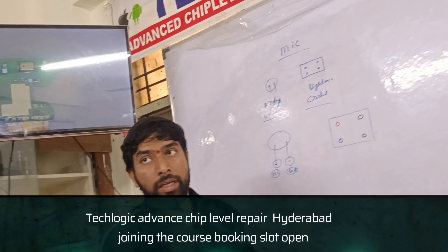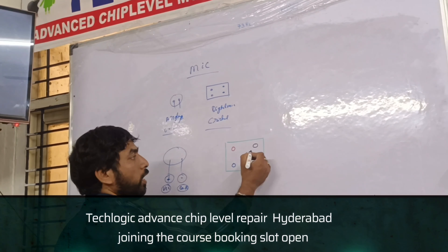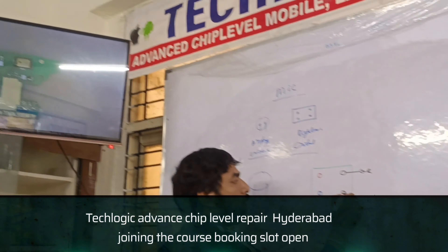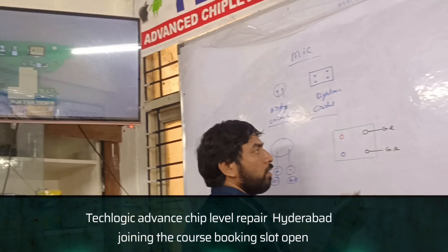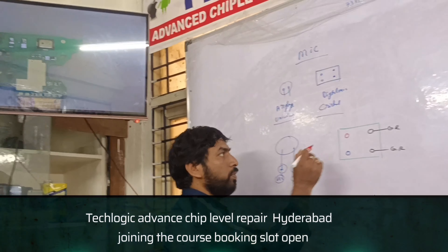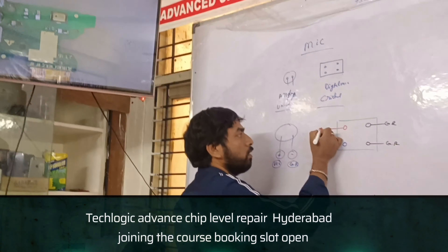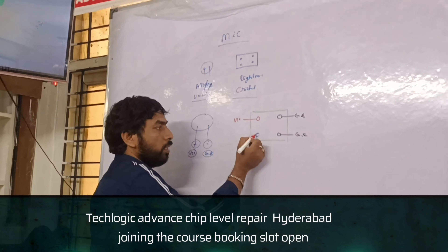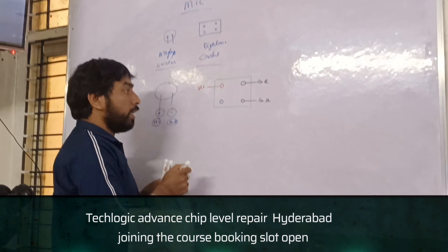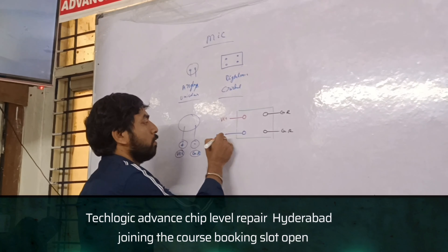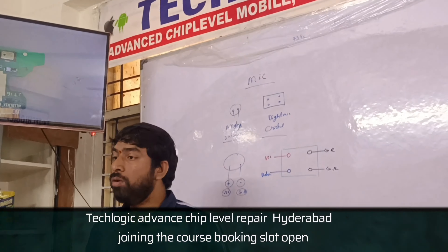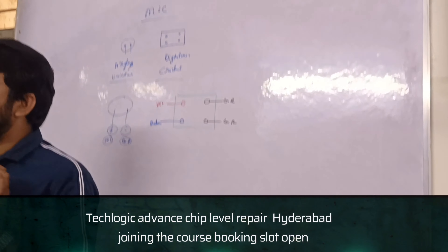2 GR — this is GR. GR means ground. This is the VCC pin; VCC is the voltage pin. If you have a blue color, this is the data pin. There are 4 legs and every leg function is different.